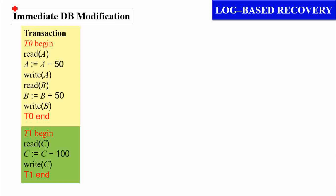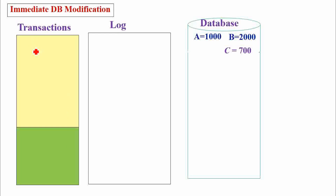Let us now discuss how the immediate database modification technique records the logs and makes corresponding updates into the database, with a serial schedule having two transactions T0 and T1. T0 transfers an amount of 50 rupees from account A to B, and T1 withdraws an amount of 100 rupees from account C. Assume A, B, and C account balances are initially 1000, 2000, and 700.